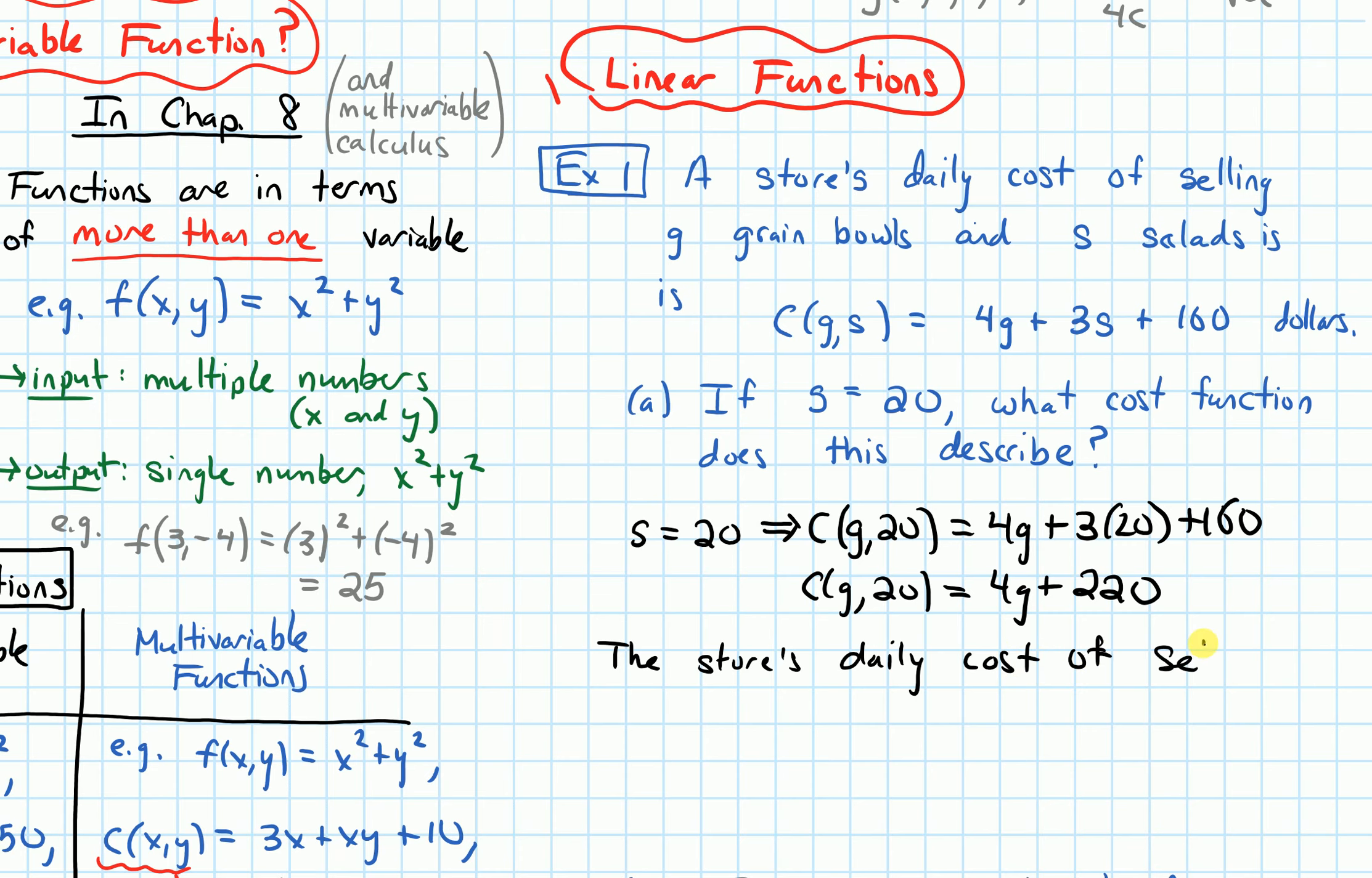So what this means is the store's daily cost of, now the only variable in this is G. So of selling G grain bowls is, and I'll make a note of what S is.